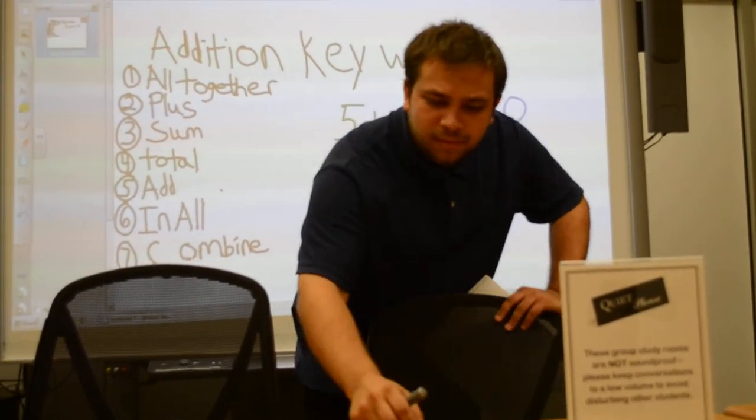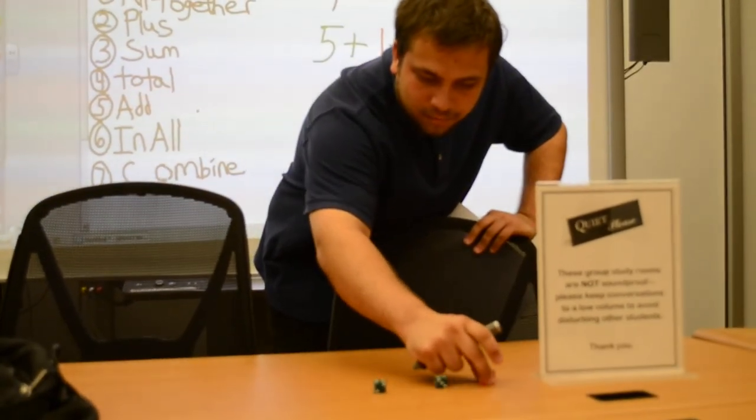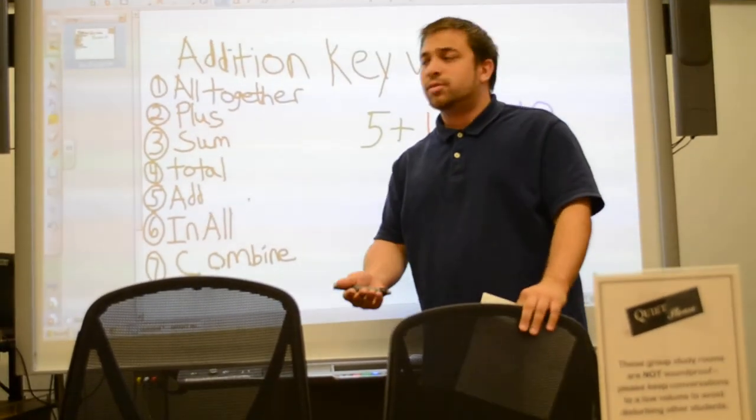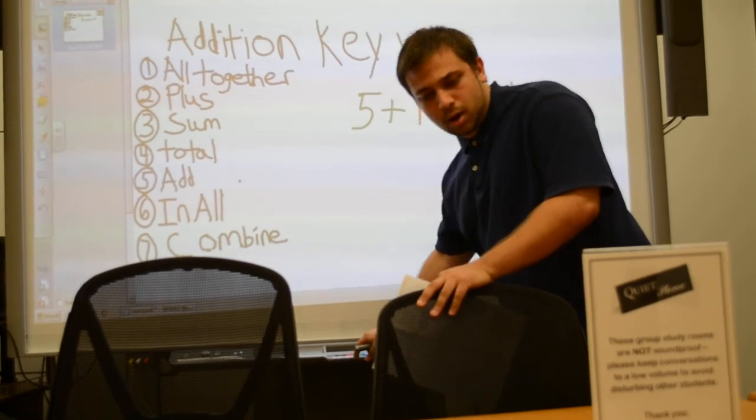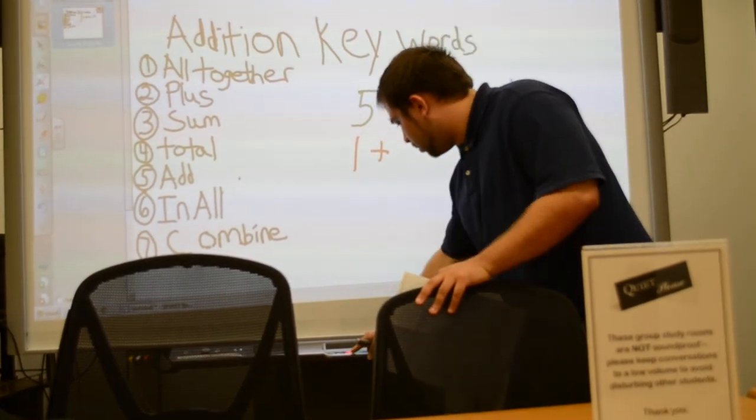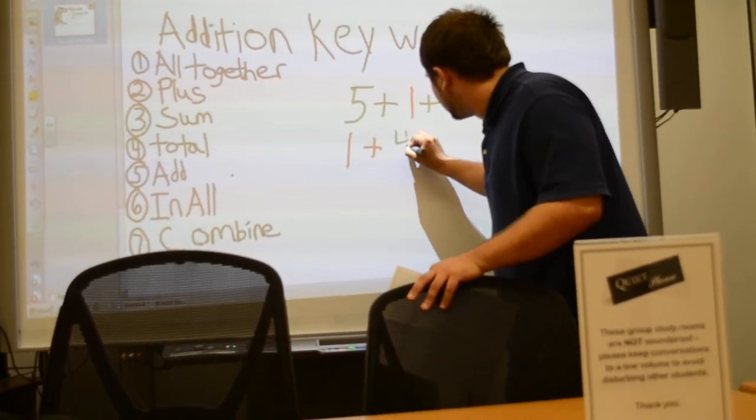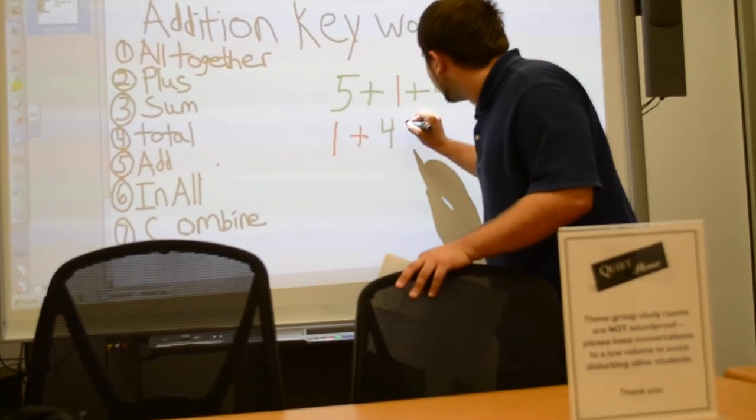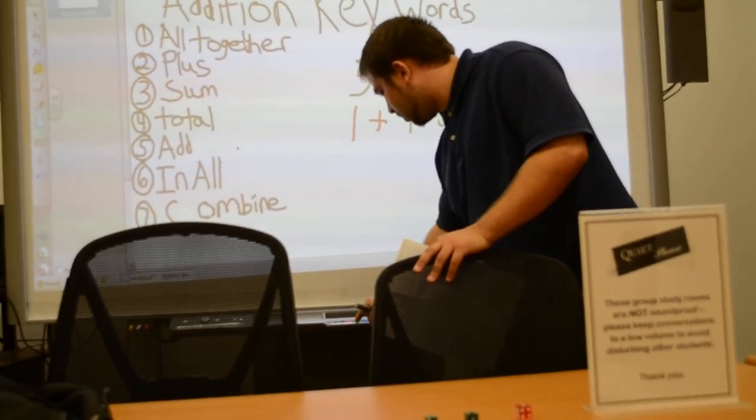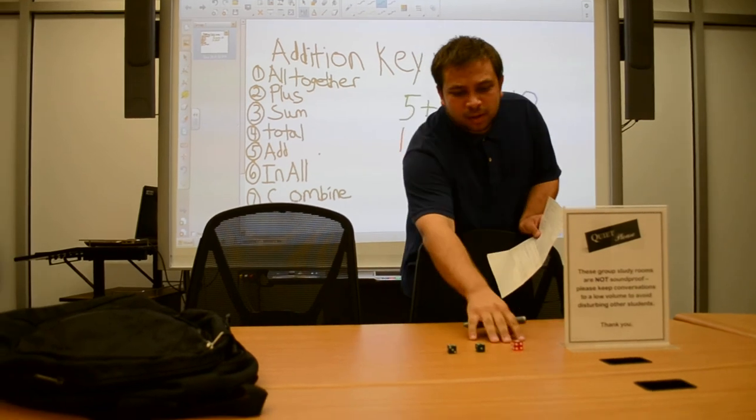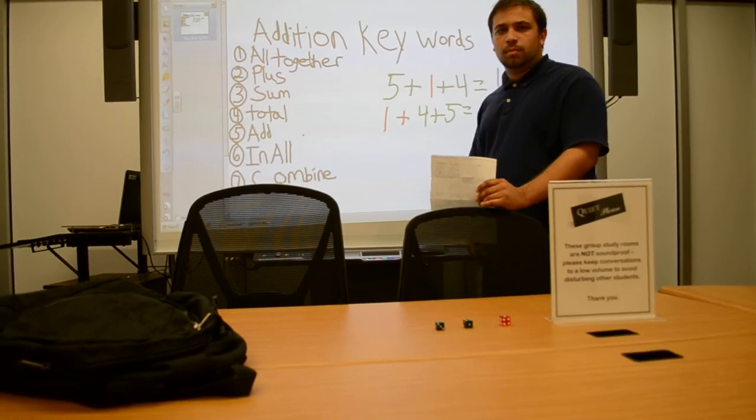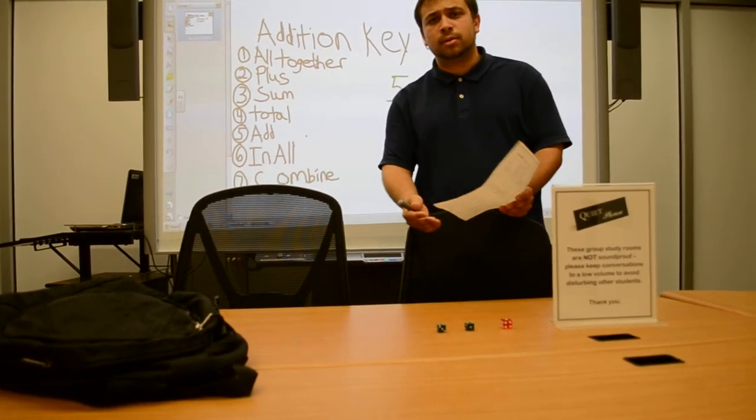But now I'm going to show you if I mix the 1 and the 5 around and I'm going to put the 4 in front of the 5. So to clarify, it's going to be 1 with the red dice, 4 with the green dice, and 5 with the green dice. I just want to show you that this is a completely different order than 5 plus 1 plus 4. And I just want to show you that you are still going to get the same answer.